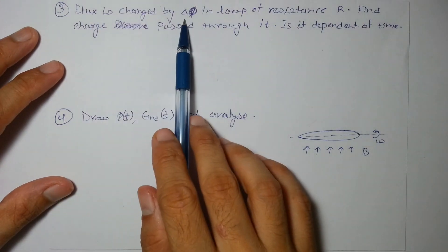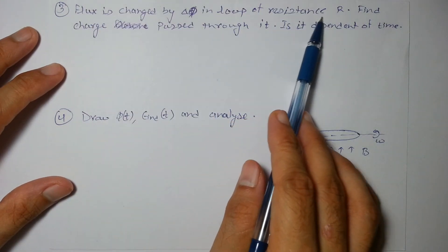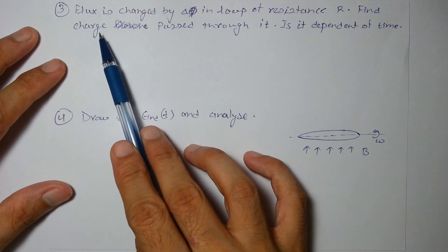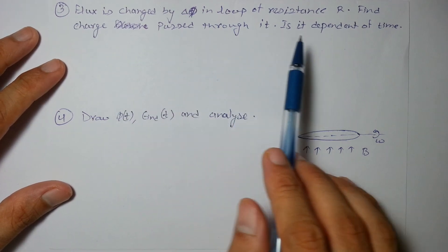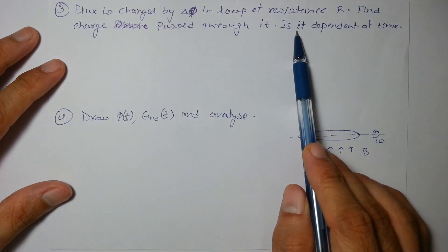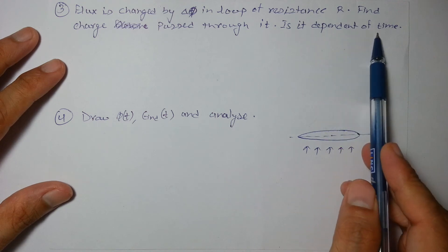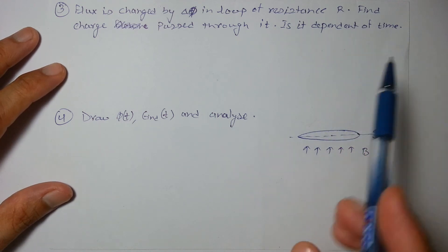The next question: flux is changed by delta phi in a loop of resistance R. We have to find the charge pass through it and we have to also comment on whether this charge passed is dependent on time or not.